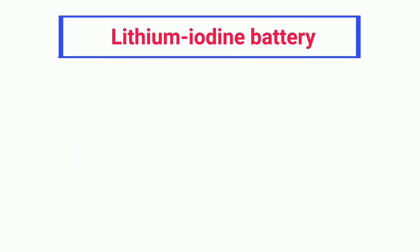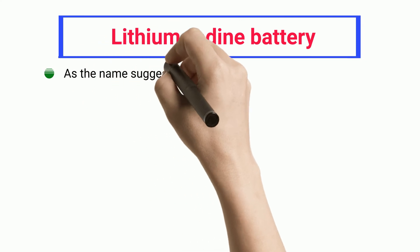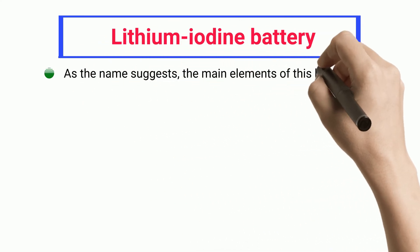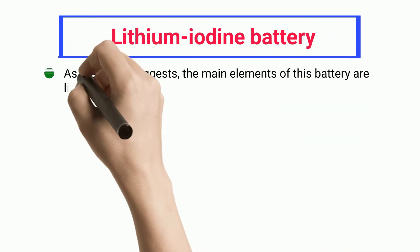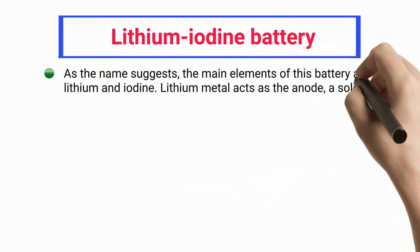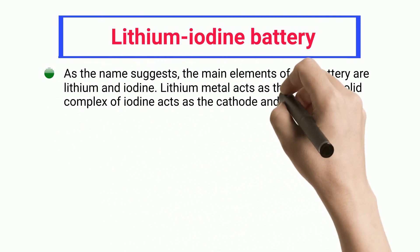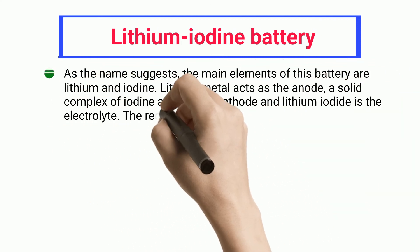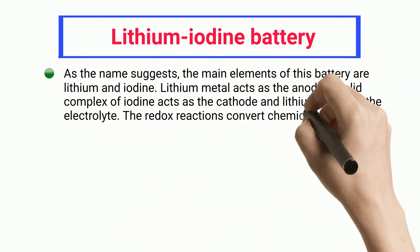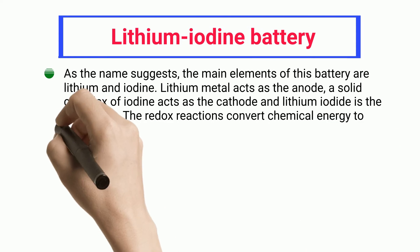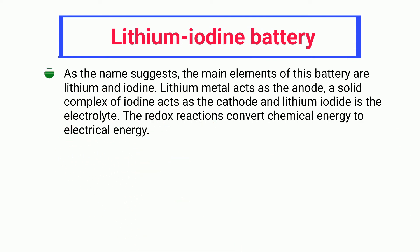Lithium Iodine Battery — as the name suggests, the main elements of this battery are lithium and iodine. Lithium metal acts as the anode, a solid complex of iodine acts as the cathode, and lithium iodide is the electrolyte. The redox reactions convert chemical energy to electrical energy.